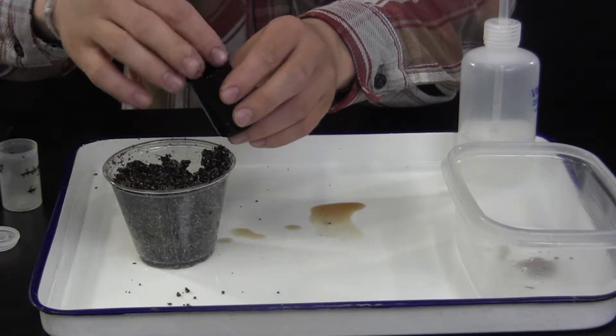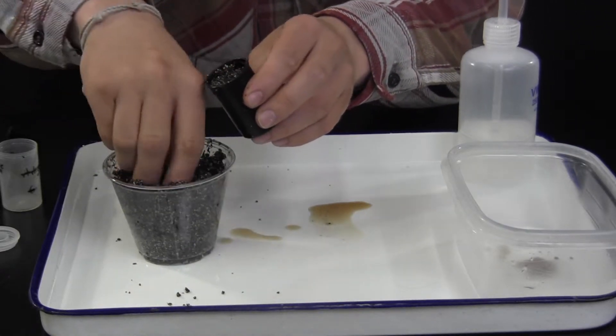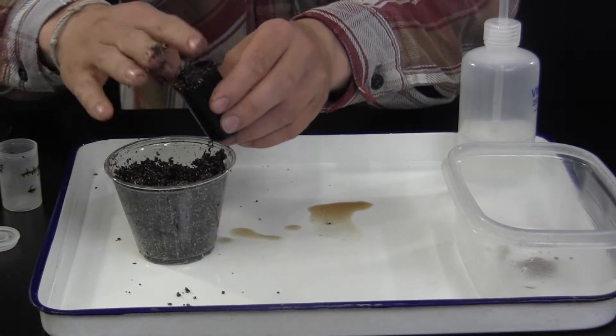Repeat the steps of tamping, wetting, and percolating water through the canister. When finished, you will want to have the medium level with the top of the canister.